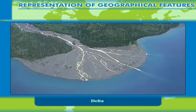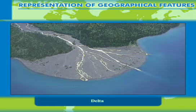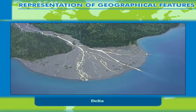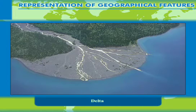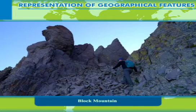A wide inverted Y-shaped alluvial fan at the mouth of a river when it empties into the sea is called a delta. The river divides into a number of channels called distributaries that take the water to the sea.